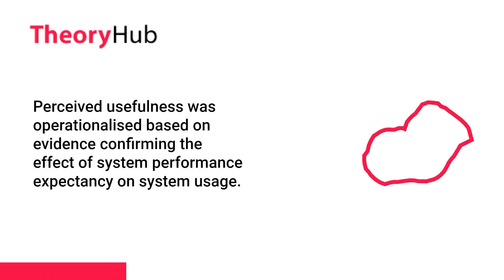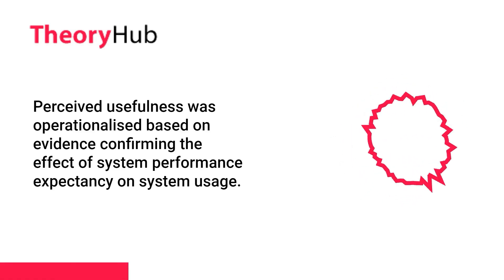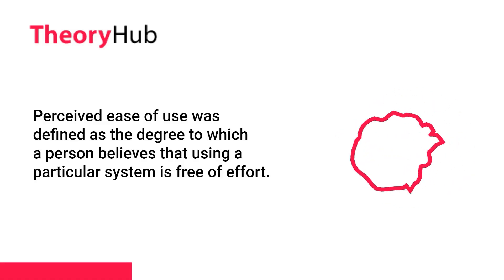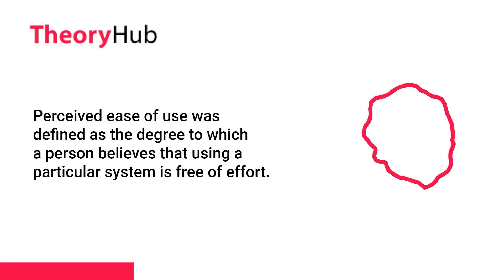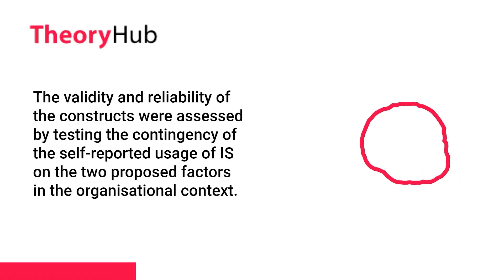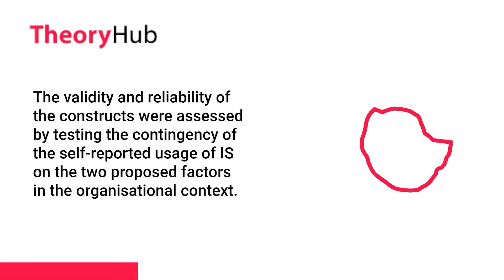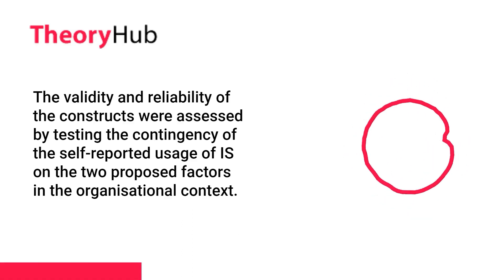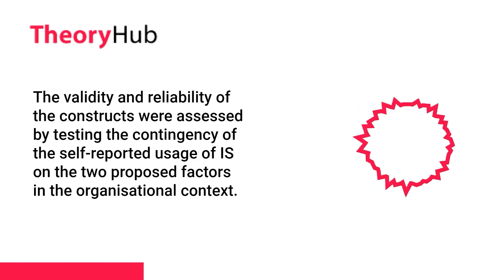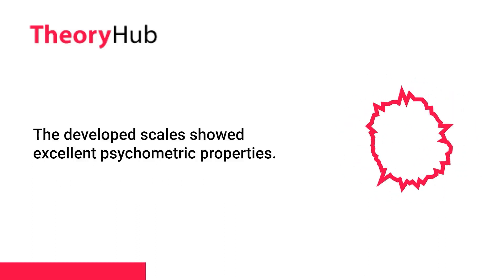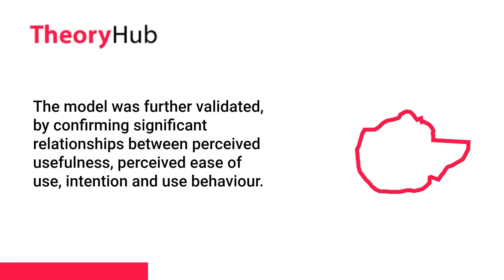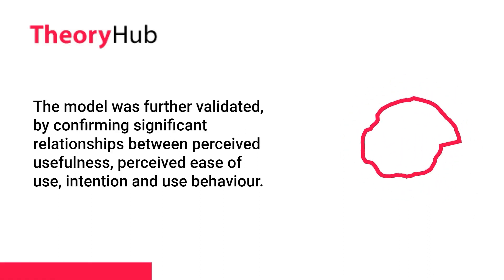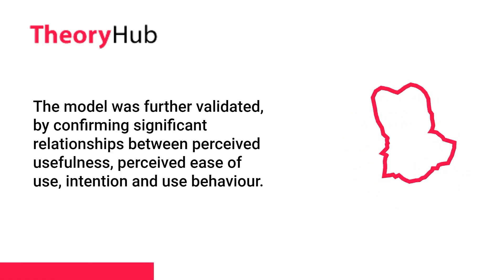Perceived usefulness was operationalized based on evidence confirming the effect of system performance expectancy on system usage. Perceived ease of use was defined as the degree to which a person believes that using a particular system is free of effort. The validity and reliability of the constructs were assessed by testing the contingency of the self-reported usage of information systems on the two proposed factors in the organizational context. The developed scales showed excellent psychometric properties, and the model was further validated by confirming significant relationships between perceived usefulness, perceived ease of use, intention, and use behavior.